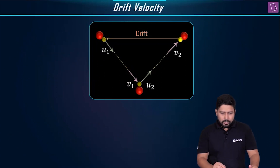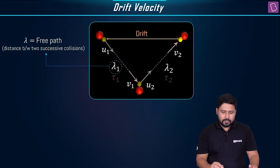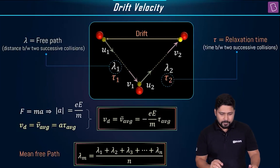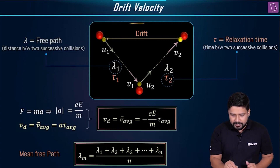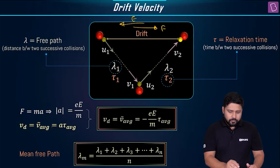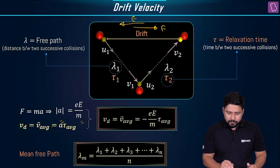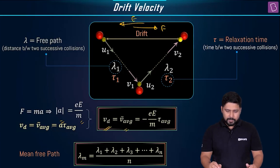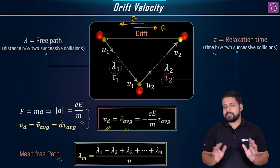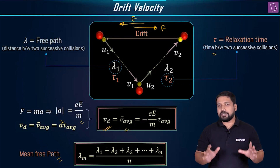The terms are important and how you got to this expression is very important — this is how you should understand how we arrive at this particular expression. We discussed the drift, the field direction, the force direction. We substitute all values: a equals eE/m, giving vd equals V average equals eE/m times tau average. We also defined the mean free path and the relaxation time.